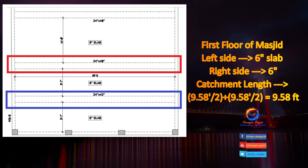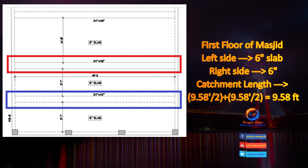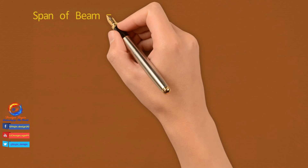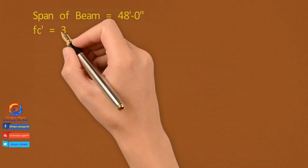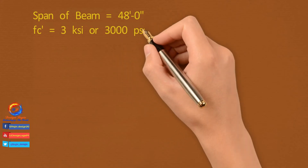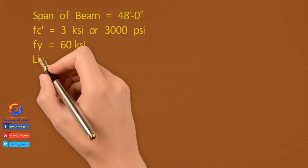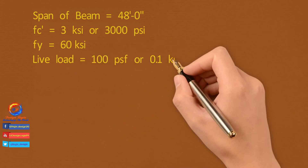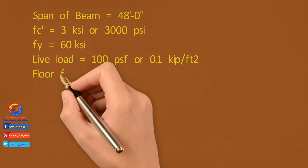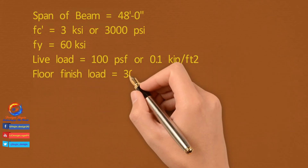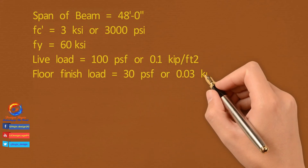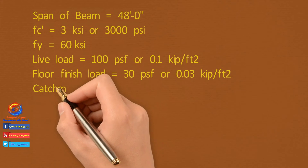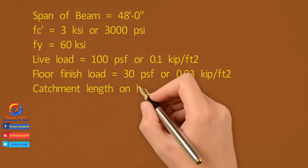Now I am checking beam deflection of first floor, which has slabs on both sides of 6-inch thick, so load on beam will increase due to increase in catchment length. Same span, concrete strength, steel yield strength, live load, and floor finish load are used for checking deflection of this beam. Catchment length increases as there is now a right side slab also of 6-inch thick.